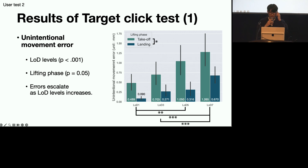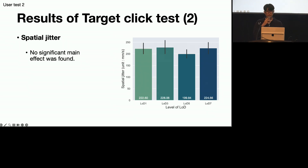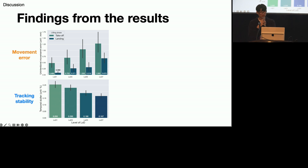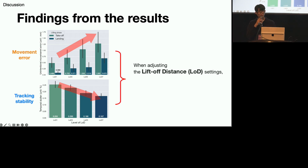The results of the target click task show a significant main effect of LOD level on unintentional movement error. Post-hoc analysis revealed that unintentional movement errors escalate as the LOD level increases. For spatial jitter, there was no significant main effect of LOD level. However, a significant main effect of LOD level on temporal stutter was found — temporal stutter decreased when LOD setting goes higher. Taken together, increasing LOD leads to greater unintended movement error but also enhanced temporal tracking stability, confirming a trade-off between tracking stability and unintentional movement error.